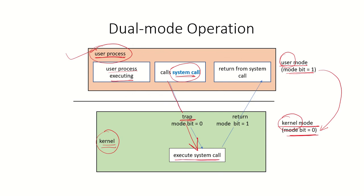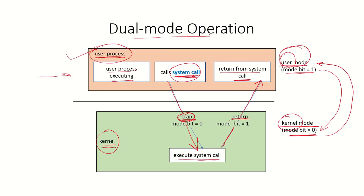Once the switch to kernel mode occurs, the system call is executed and whatever the operating system needs to do for that request is taken care of. Then there is a return back to the user program. Once the kernel has finished handling the trap, it goes back to user mode, and the mode bit changes from 0 to 1, telling the system it is back to running user code. This is how dual mode operation takes place.